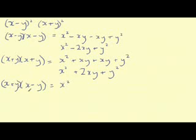x times x gives x squared. x times plus y gives plus xy. minus y times x gives minus xy. minus y times y gives minus y squared. Now look at the xy and the minus xy. They cancel out.